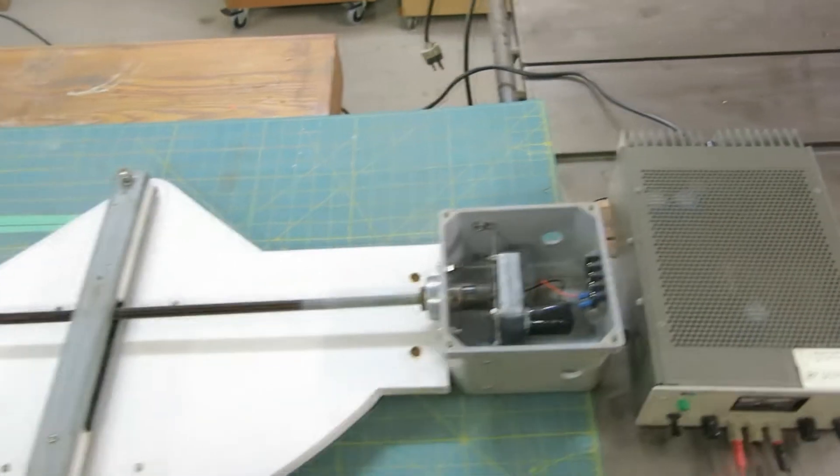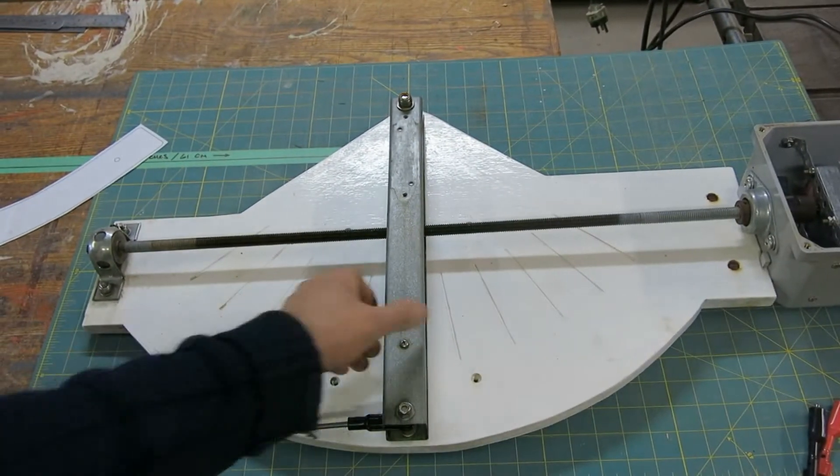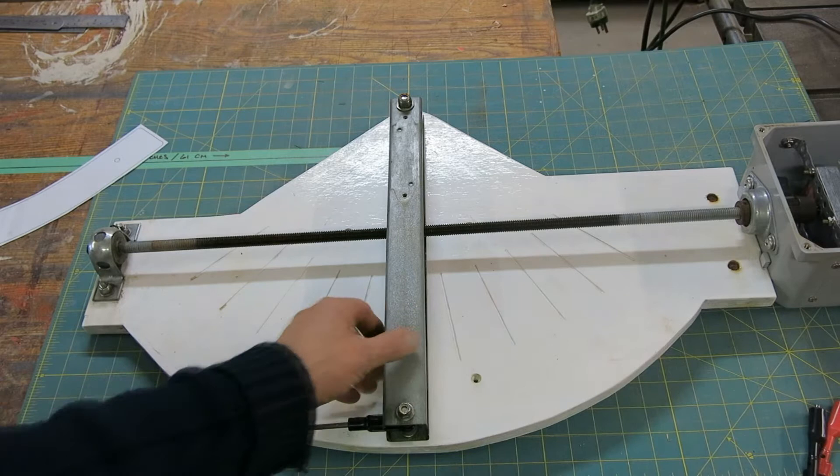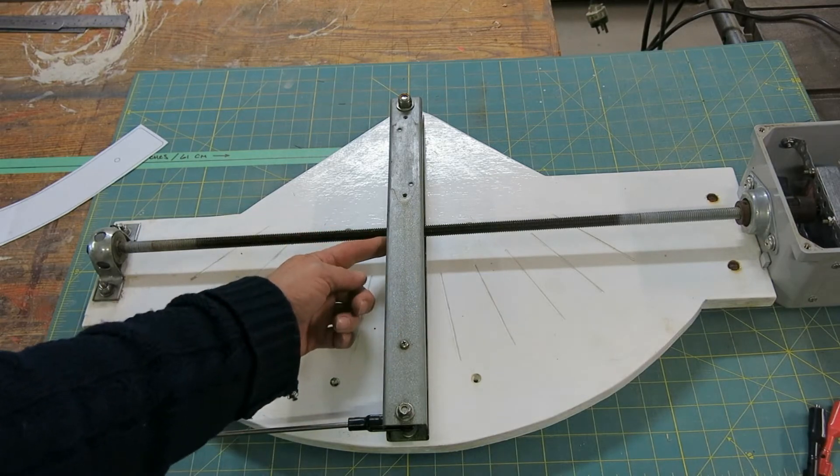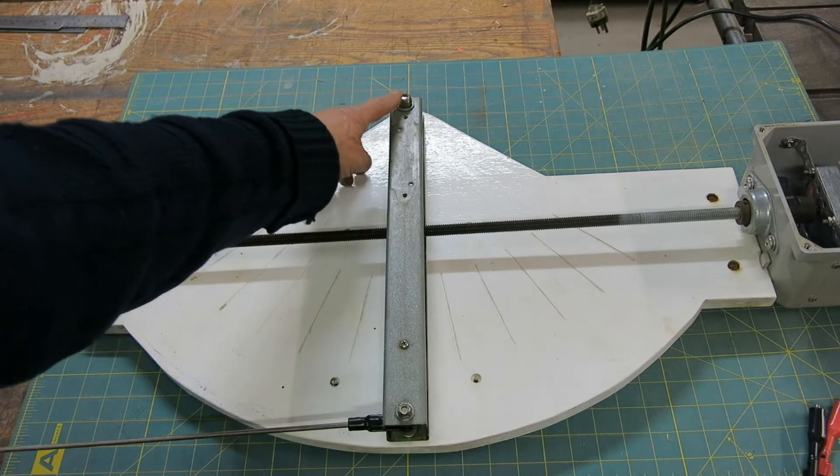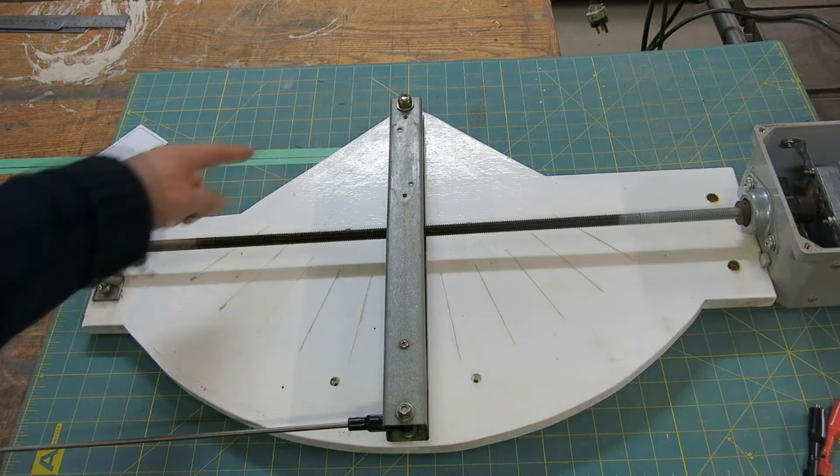Coming down this way we have a channel arm which has a nut in it here, I'll show you that in a moment, and it pivots on this shaft which is actually the same point as the focal line.